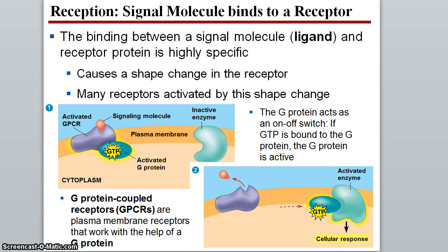With reception, a signal molecule — sometimes called a ligand — is going to bind to a receptor. Keep in mind that protein binding is very specific. Only one type of signal molecule can bind to a given receptor. When this signal molecule binds to the receptor, it's going to cause some type of shape change or conformational change in that receptor.